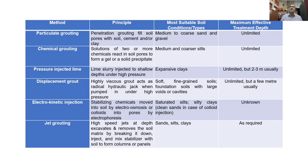Electro kinetic injection involves stabilizing chemicals moved into soil by electroosmosis, or colloids injected into pores by electrophoresis. It is suitable for saturated silts, silty clays, and clean sands in the case of colloid injection. The effective treatment depth is usually unknown in this case.